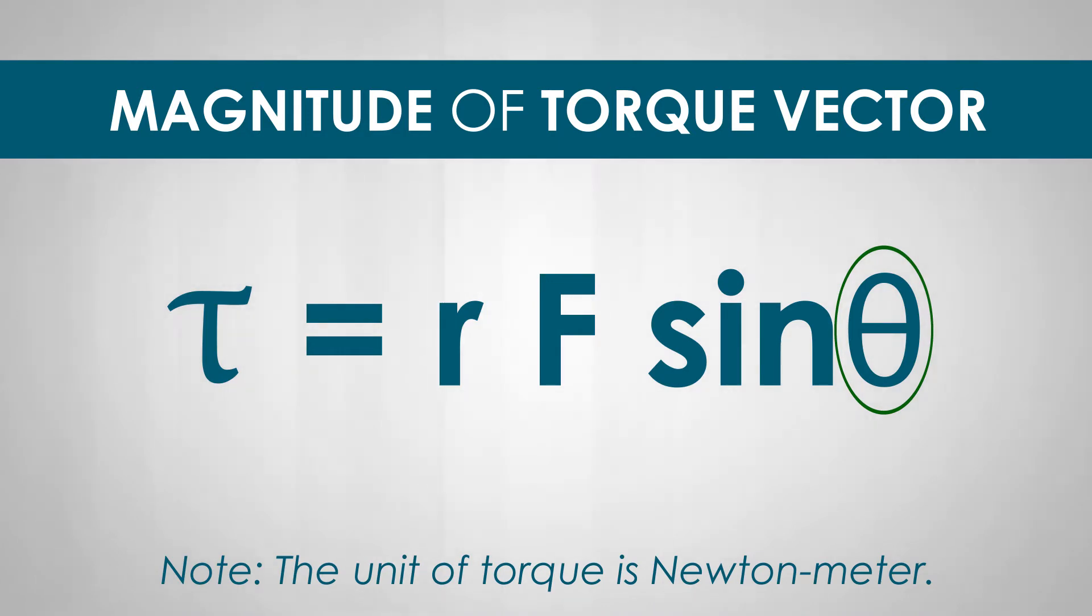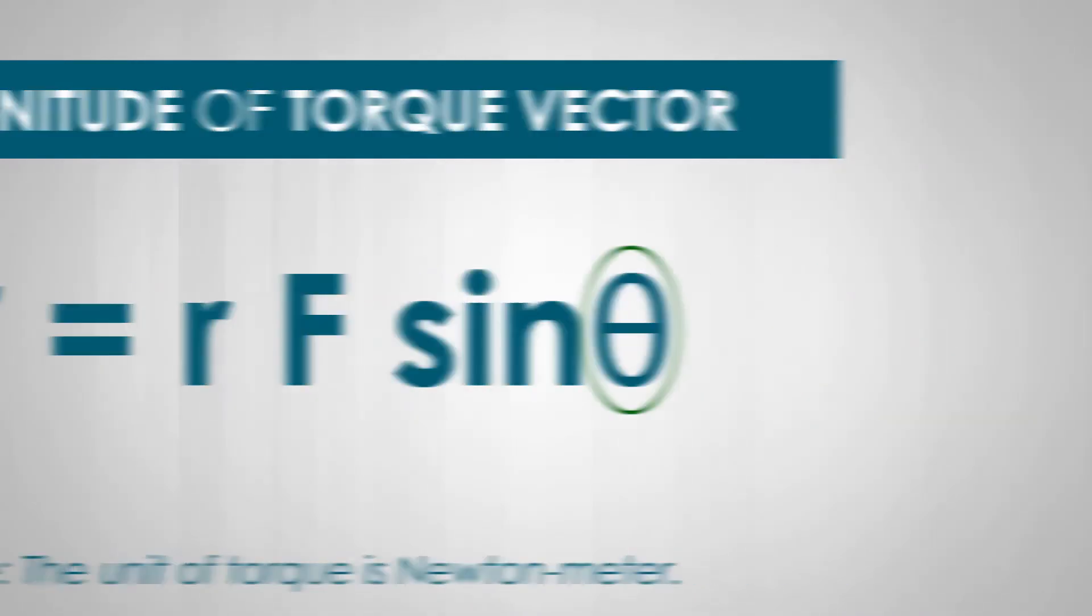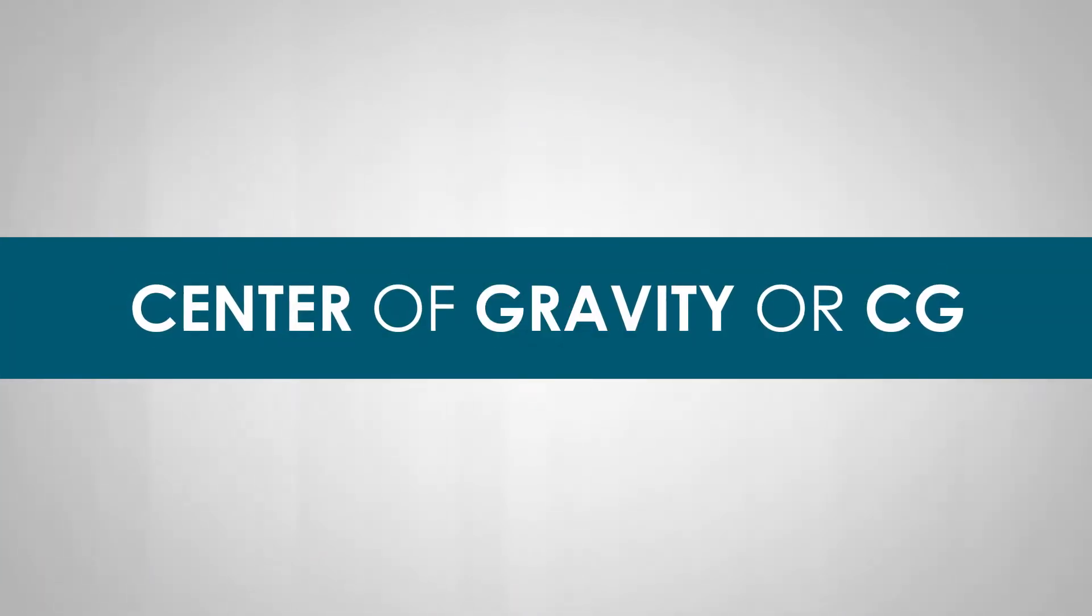Center of gravity, or CG, of an object is a point where the total weight of the object may be thought to be concentrated.